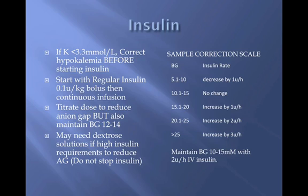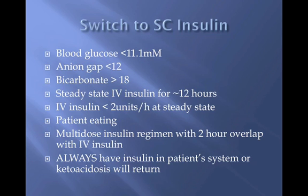Dextrose-containing solutions, as mentioned, are needed to maintain blood glucose as insulin must not be stopped. Increase dextrose solutions in order to continue insulin at minimum levels. The following is the criteria to switch to subcutaneous insulin. It's important to always have insulin on board or the patient will slip back into DKA. Ensure the anion gap is closed and the patient is eating. A steady-state insulin rate of less than 2 units per hour is recommended; otherwise a large subcutaneous dose may be needed.